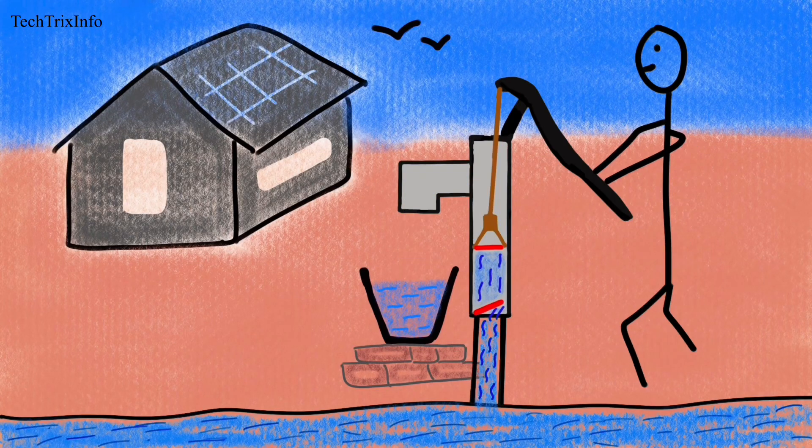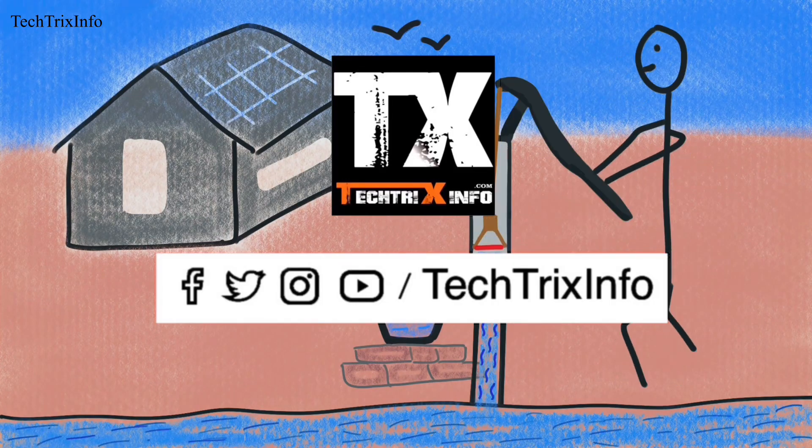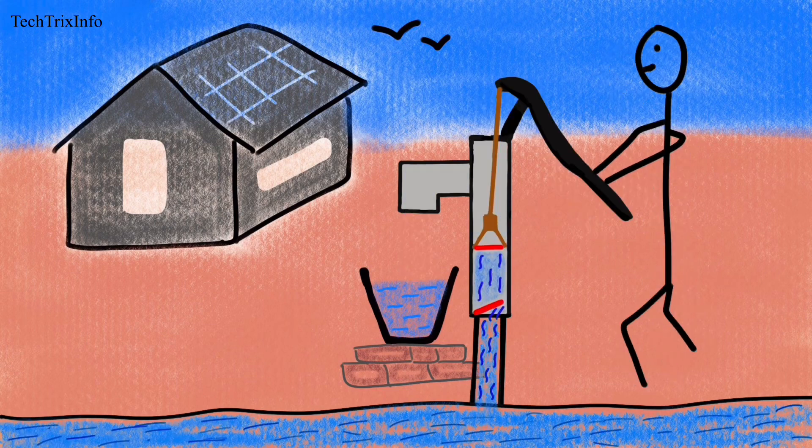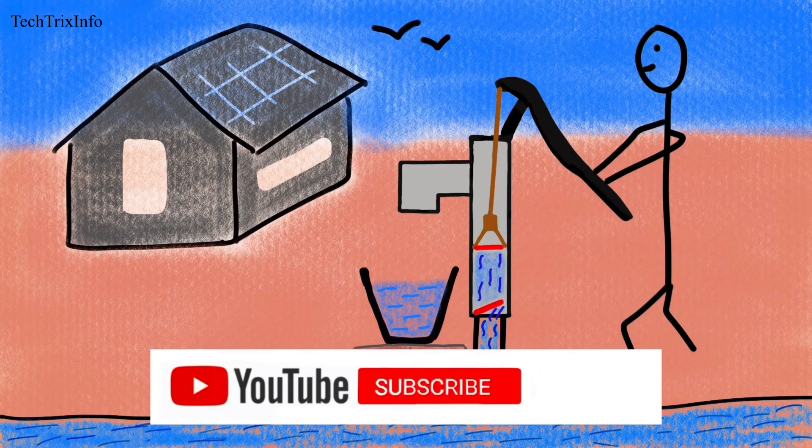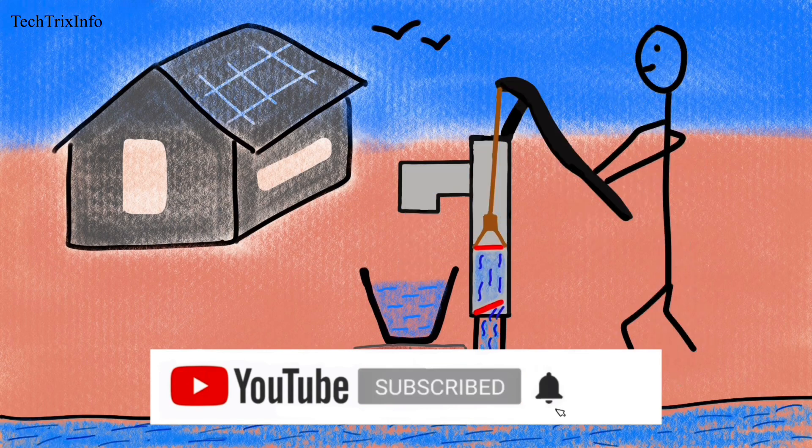Welcome to another video from TechTrix Info. With the help of this animation, let's learn how a hand pump works. A hand pump is a mechanical device which is operated manually to pump fluid from one location to another.